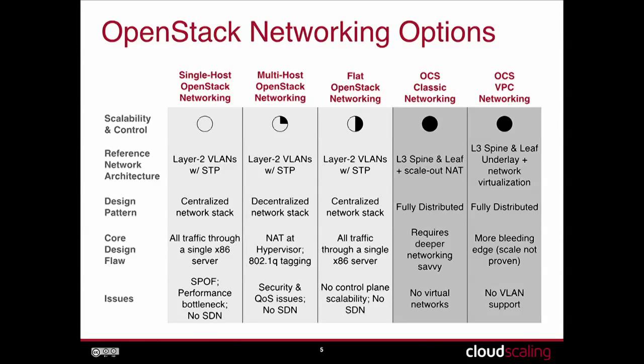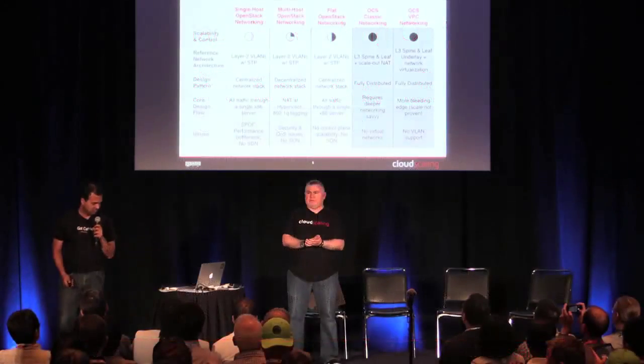Nova Network supports three basic networking modes. The single host mode, in which all traffic goes through a single x86 box running Nova Network. The multi-host mode distributes the network manager into the compute nodes. And then the flat networking model. On the right-hand side, we have the two networking modes in OCS: the OCS L3 networking mode we're discussing today, and an integration with OpenContrail that is a VPC-type networking mode in OCS. OCS is our product, Open Cloud System — a cloud operating system based on OpenStack.